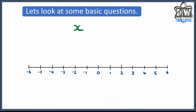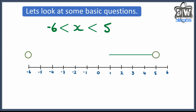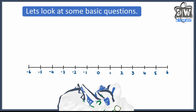These next ones get a little bit more involved, but they're not really more difficult. So we've got x is bigger than minus 6 but smaller than 5. Your starting point is to put a circle on minus 6, a circle on 5, and then link the two together. Because there are no 'equal to' signs, both circles remain unshaded.